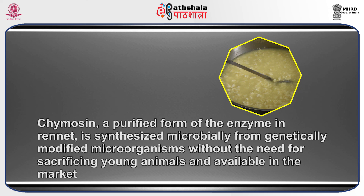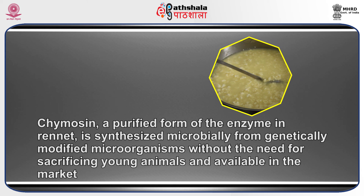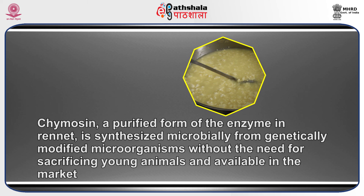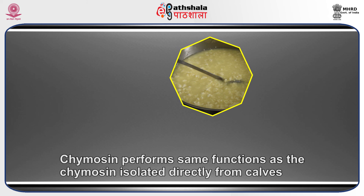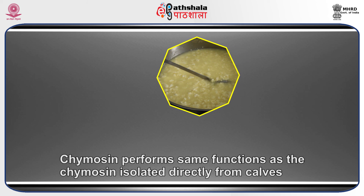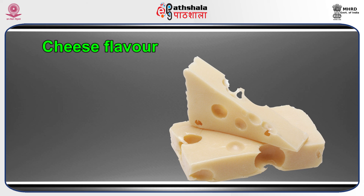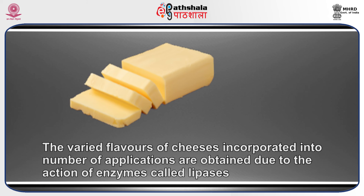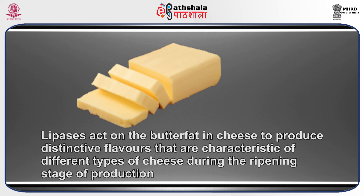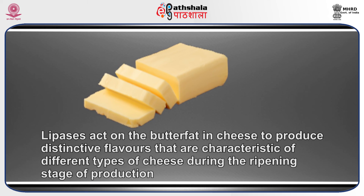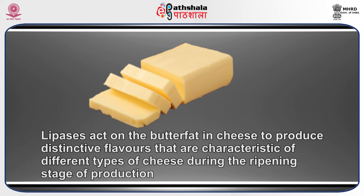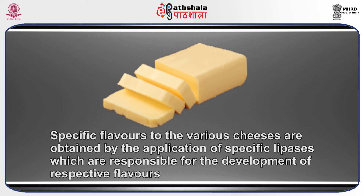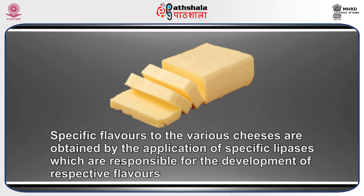Chymosin, a purified form of the enzyme in rennet, is synthesized microbially from genetically modified microorganisms without the need to sacrifice young animals and is available in the market. This chymosin performs the same function as chymosin isolated directly from cows. Enzymes are also used to improve cheese flavor; the varied flavors of different cheeses are obtained due to the action of lipases. Lipases act on butterfat in cheese to produce distinctive flavors characteristic of different cheese types during the ripening stage. Specific flavors are obtained by applying specific lipases responsible for developing respective flavors.